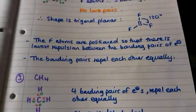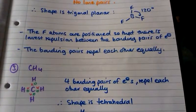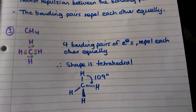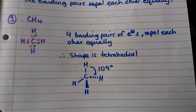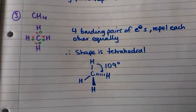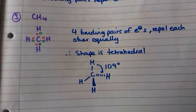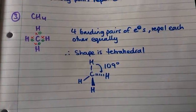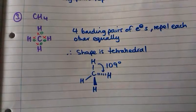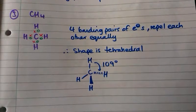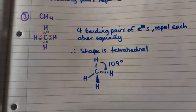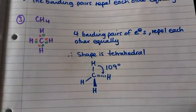Next example: CH₄, methane. There are four bonding pairs of electrons that are all repelling each other equally, so the shape is tetrahedral and the bond angle is 109 degrees. One thing to note is that the wedged bond means it's pointing out from the plane of the paper, the dashed bond means it's pointing away, and the usual single bonds are in the plane of the paper — that's how we show molecules in 3D when we draw them.